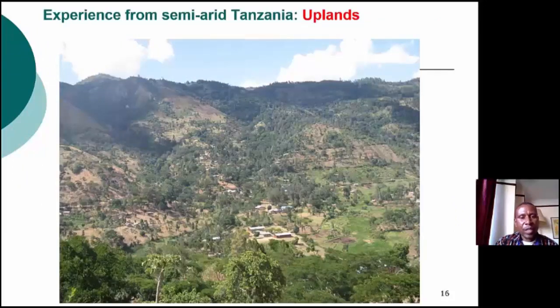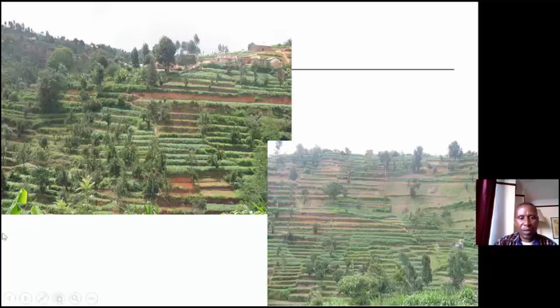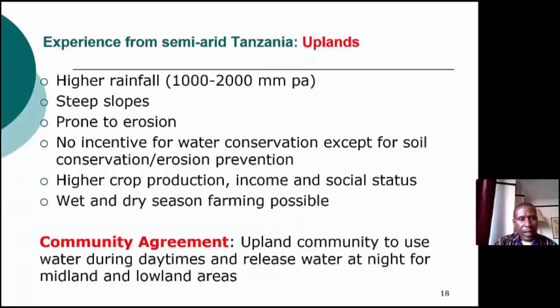In the uplands, people quite often don't make efforts to conserve moisture for lowland communities — they ensure they get enough water and good harvests. Sometimes they do conservation, sometimes they don't. Their most significant conservation practice is soil conservation, as these are steep slopes prone to soil erosion. In the Makanya subcatchment, the upland normally gets rainfall up to 2,000 millimeters per annum, slopes are very steep and prone to erosion. There is no incentive for water conservation because water is plentiful, except for soil conservation.